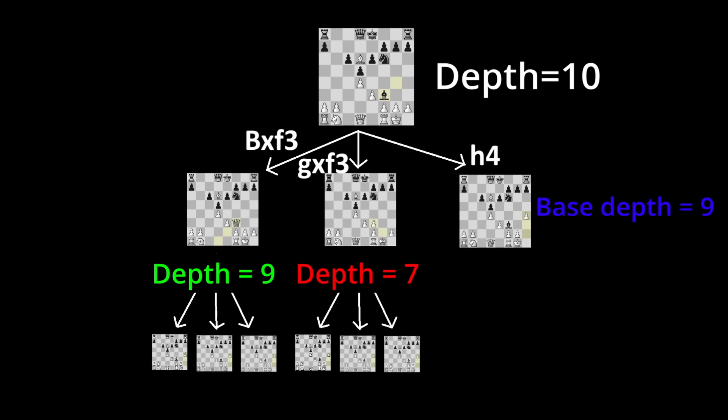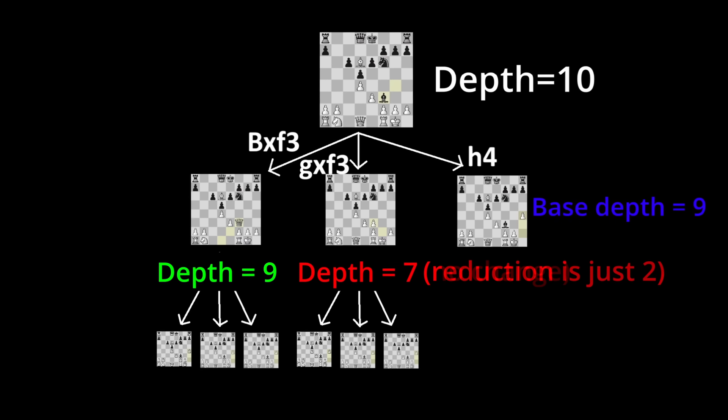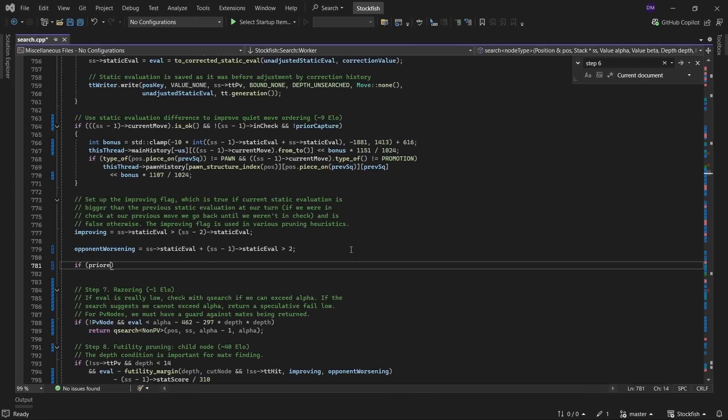But at the same time, you don't want this trick to apply to moves that already have a small reduction, so I set it to only apply when the move was going to be reduced by a depth of at least 3.